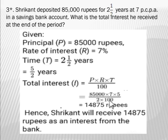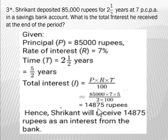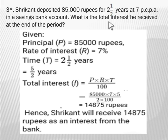Cancel the two zeros of 85,000 with the two zeros of 100, giving 850 × 7 × 5 ÷ 2. Multiplying 850 × 7 × 5 and dividing by 2 gives 14,875 rupees. Hence Shrikant will receive 14,875 rupees as interest from the bank. In this example you only need to find the total interest, not the amount, since it was not asked. Be very careful — always check what is given and what is to be found.